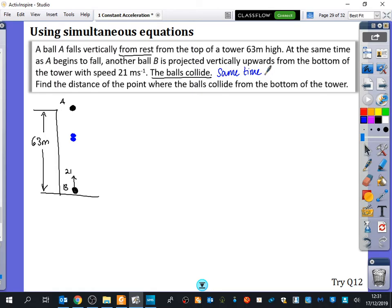They also must be in the same place. That doesn't mean the same displacement. They must be in the same time and the same place because they collide with each other. So what do we know about the distance that A has travelled and the distance that B has travelled? The distance that A has travelled and the distance that B has travelled must add up to 63. So I'm just going to say the distance of A plus the distance of B must be equal to 63.